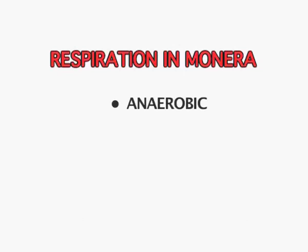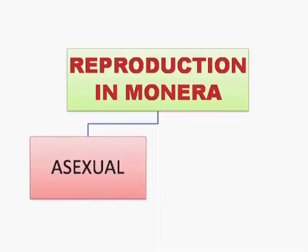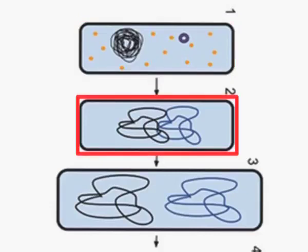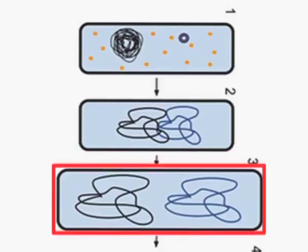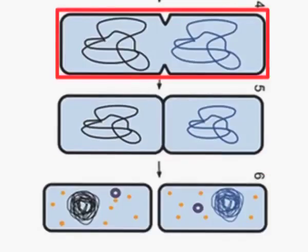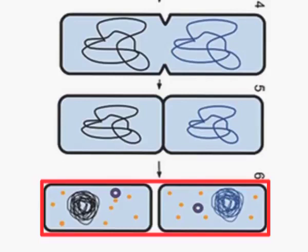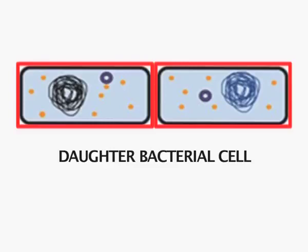Respiration is both anaerobic as well as aerobic. Reproduction in Monorans is also both asexual and sexual. As you can see in the figure, asexual reproduction takes place by binary fission. The DNA replicates first, the bacterial cell starts growing and enlarges in size, then once replication is complete, the two DNA molecules move to opposite poles. A constriction appears in the middle, deepens, and finally results in the formation of two separate daughter bacterial cells, each with its own DNA and capable of independent existence.